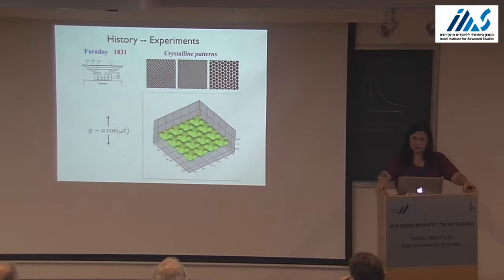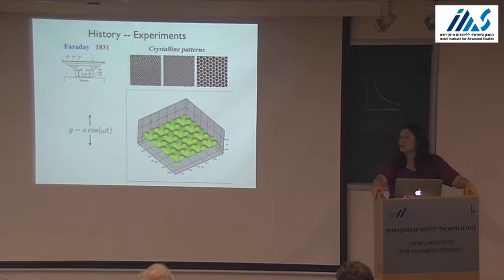Here's what square Faraday waves look like. You see that the peaks become troughs, and the troughs become peaks.